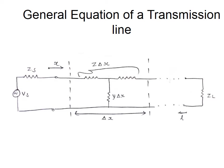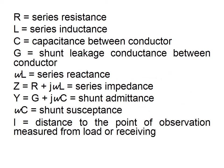For our analysis, an incremental element Δx will be used for solving the equations. When considering from the source end, the reference axis is x, and when measuring from the load end the reference axis is L — both axes are opposite in direction. R is the series resistance, L the series inductance, C the capacitance between the two parallel conductors, and G the shunt leakage conductance between conductors.